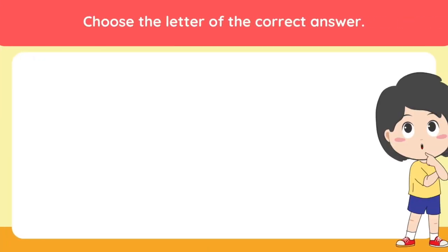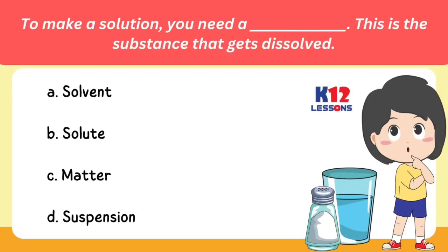Choose the letter of the correct answer. To make a solution, you need a blank — this is the substance that gets dissolved. A. Solvent. B. Solute. C. Matter. D. Suspension.